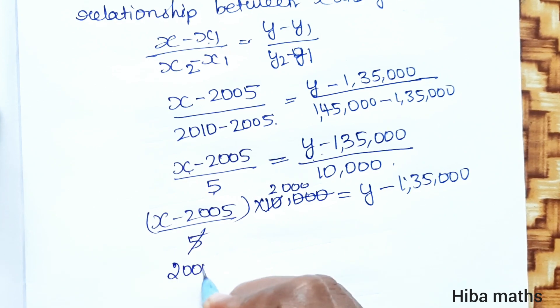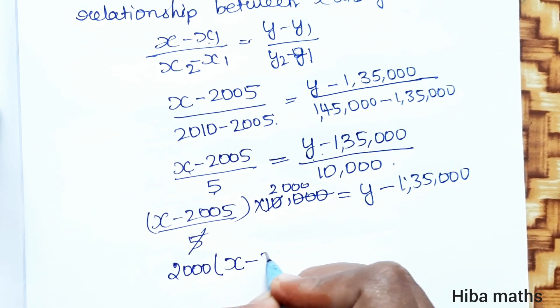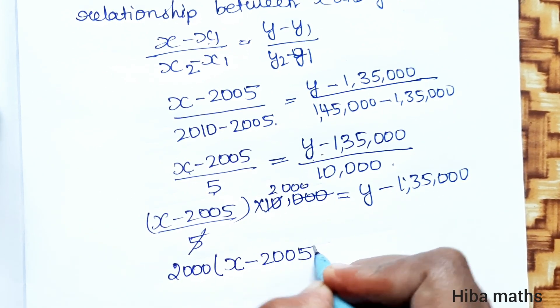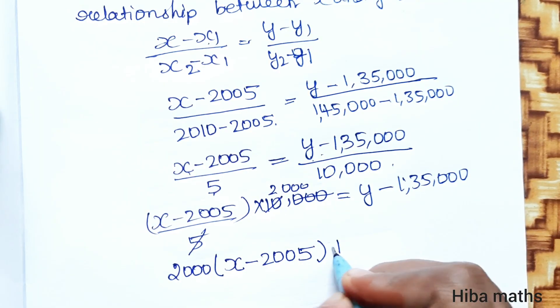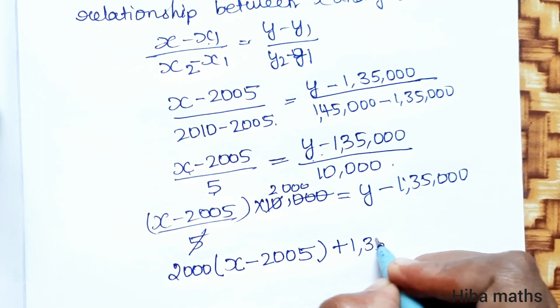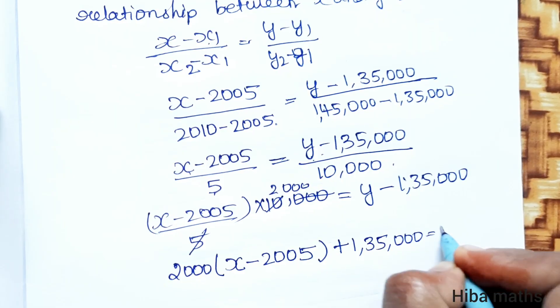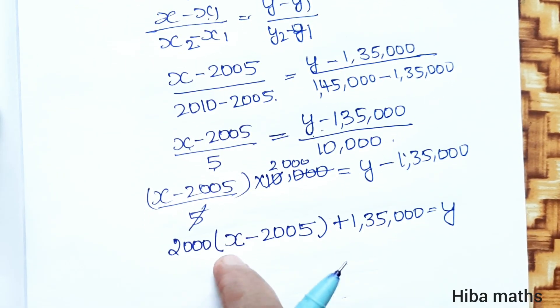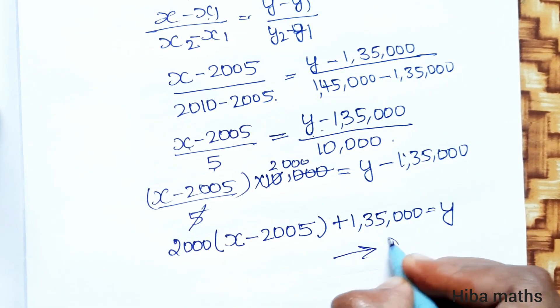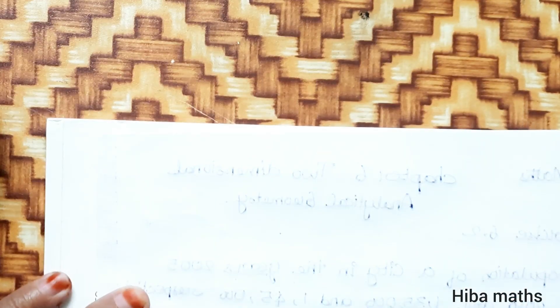2,000 into (x - 2005) plus 1,35,000 equals y. Now, population equals y.